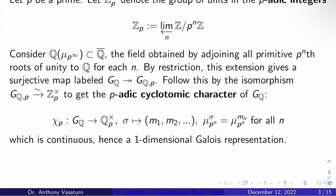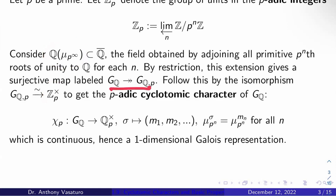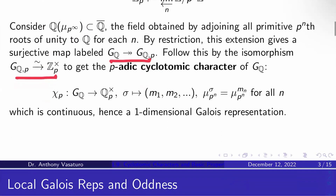Consider the field extension of Q given by adjoining all the primitive P to the Nth roots of unity to Q. We'll call that extension Q adjoin mu_{P^∞} in Q-bar. By restriction of maps, this extension gives a surjective map from G_Q to G_{Q_P}, which is the Galois group of this extension. By number theory, this Galois group is actually Z_P×. Following this surjection by that isomorphism, you get a natural map from G_Q to Z_P×, which we call the P-adic cyclotomic character of G_Q, written chi_P.